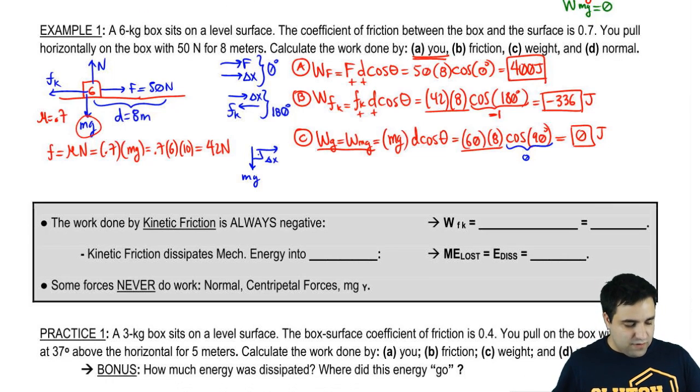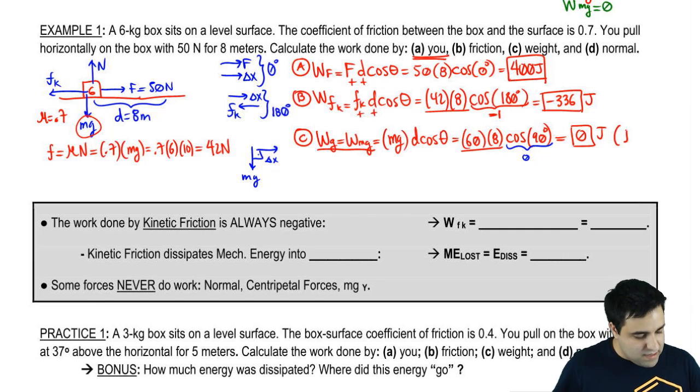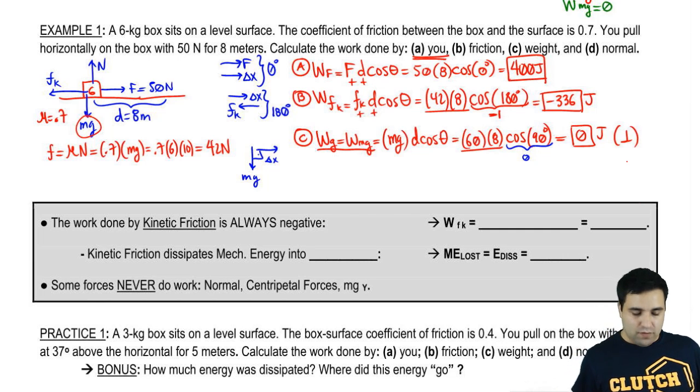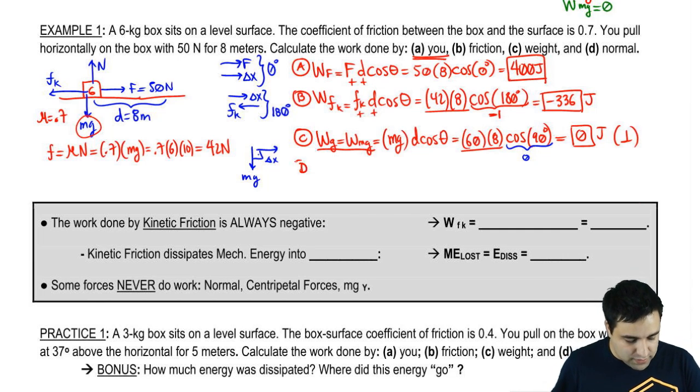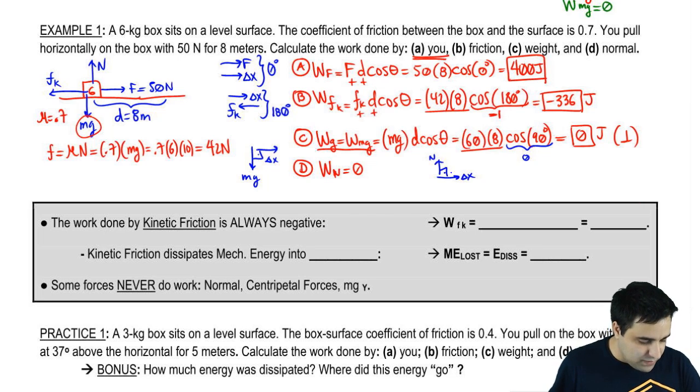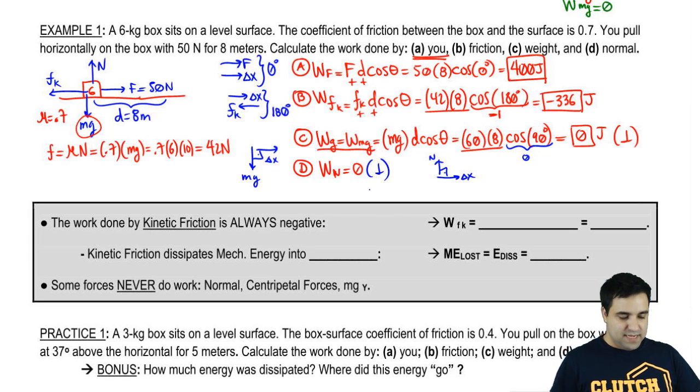You could have done this whole thing much faster by just realizing it's perpendicular. It makes 90 degrees, so there's no work. That's what's going to happen with normal. The work done by normal, we're going to know right away it's 0 because normal is perpendicular to my displacement.